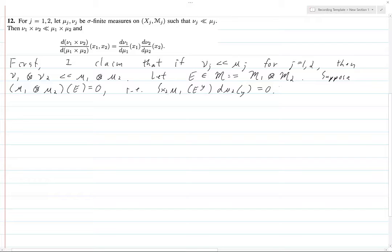Okay, so now let G equal X_2 such that μ_1(E^y) equals zero, and B equals y such that μ_1 of E^y is not equal to zero. So G is good and B is bad.